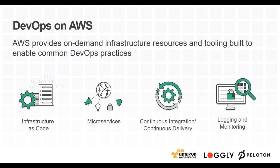AWS provides on-demand infrastructure resources and tooling built to enable common DevOps practices. For infrastructure as code, services like CloudFormation and OpsWorks let you specify infrastructure in a repeatable fashion as code. For microservices, we have EC2 Container Service (ECS). For CI/CD, we have CodePipeline, CodeDeploy, and the recently announced CodeStar. For logging and monitoring, we have CloudWatch and CloudWatch Logs.